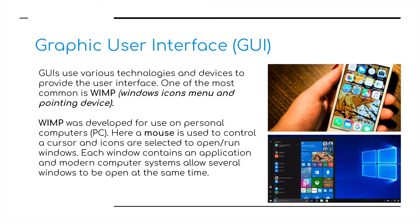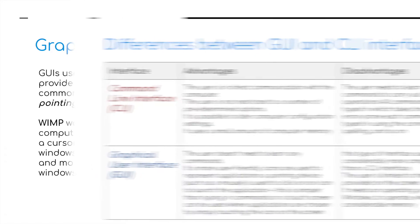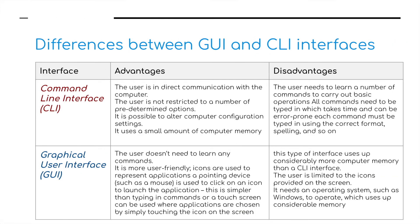The graphic user interface uses various technologies and devices to provide the user interface. One of the most common is WIMP — Windows, Icons, Menus and Pointing Devices. The pointing device, as you can see, is my trackpad or mouse controlling a cursor on the screen. The WIMP was developed for use on personal computers. A mouse is used to control a cursor and icons are selected to open and run windows. Each window contains an application, and modern computer systems allow several windows to be open at the same time — i.e. multitasking.